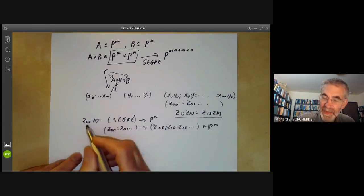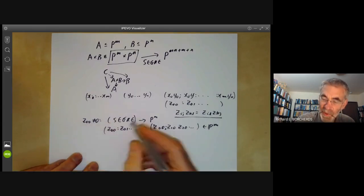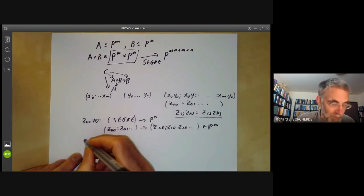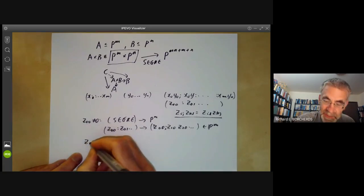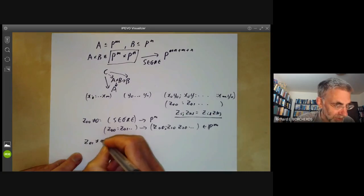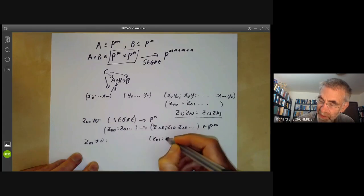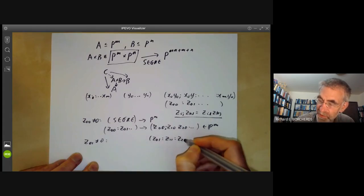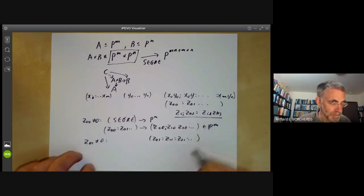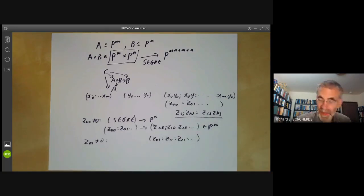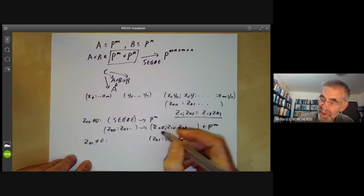On the other hand, instead of taking the set Z0,0 non-zero, we might take a different open set, say Z0,1 not equal to zero. And here the map is given by mapping it to Z0,1, Z1,1, Z2,1 and so on.